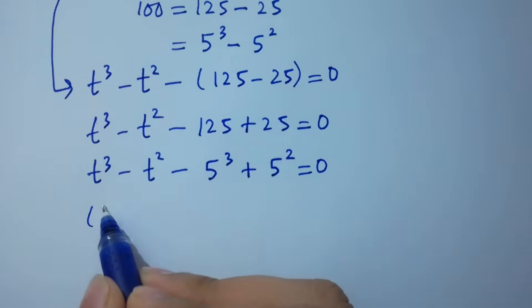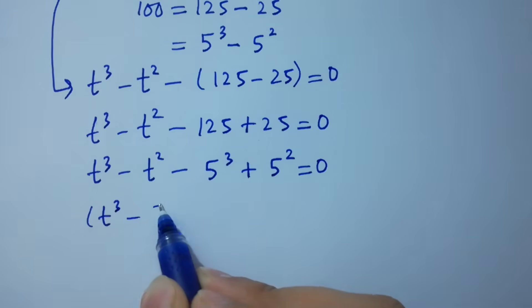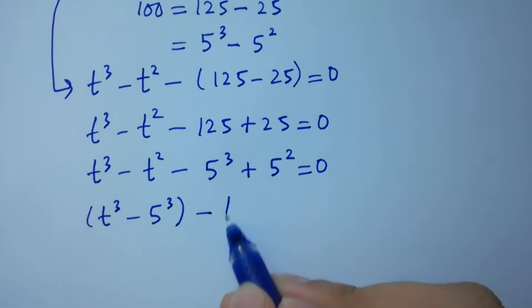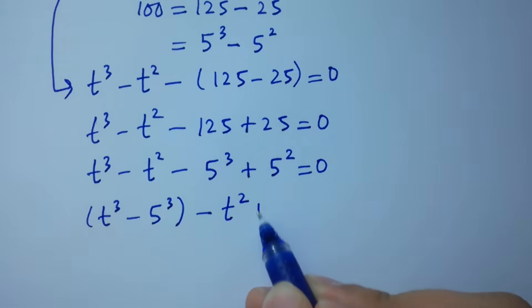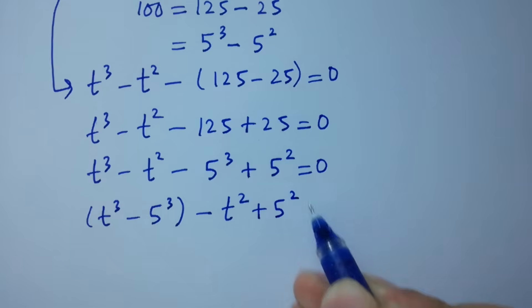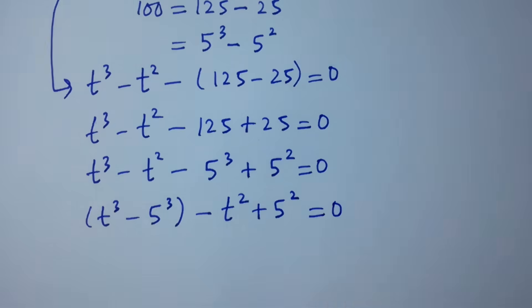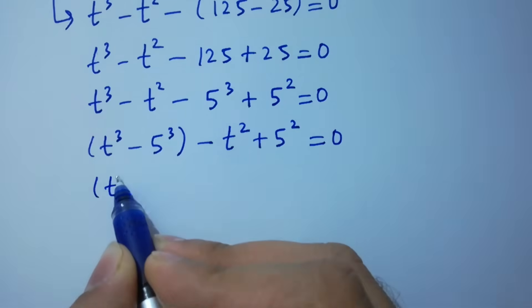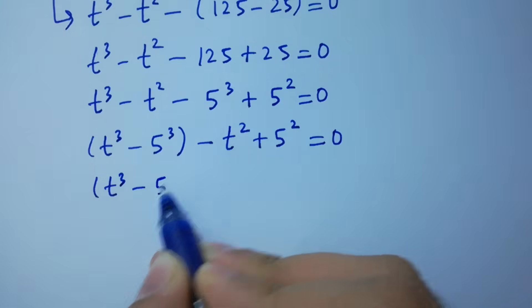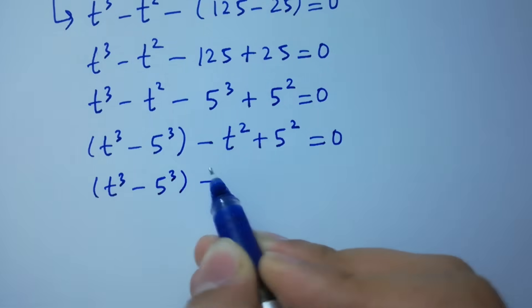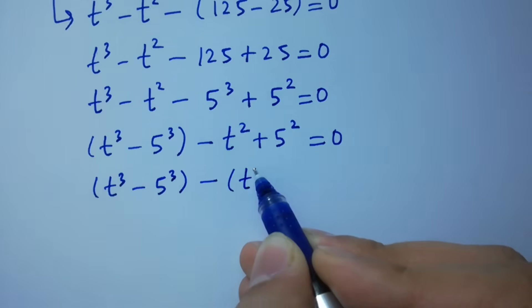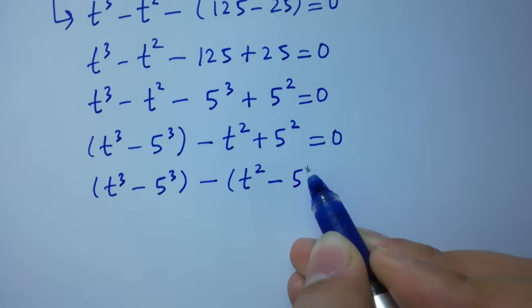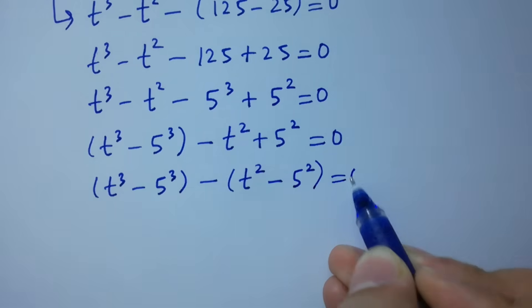Rearranging, we get t cubed minus 5 cubed minus t squared minus 5 squared equal to 0.